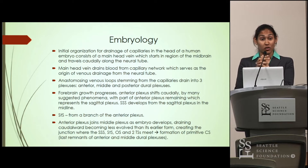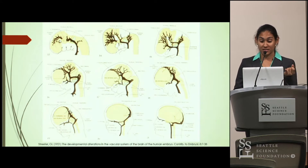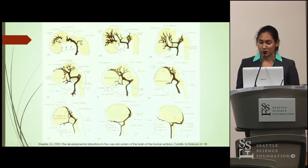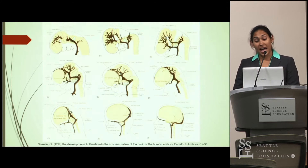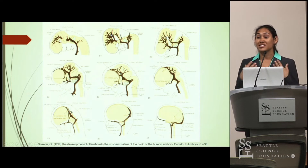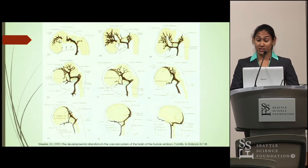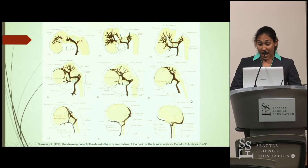From this network of capillaries, there are anastomosing venous loops that drain into three plexuses: the anterior plexus, the middle plexus, and the posterior plexus. As forebrain growth progresses, the anterior plexus shifts caudally, but part of it remains where the forebrain is, becoming the sagittal plexus. From the sagittal plexus, we get formation of the superior sagittal sinus.